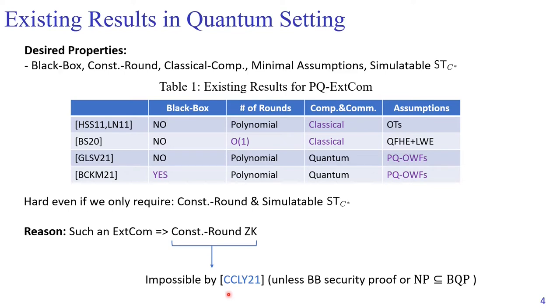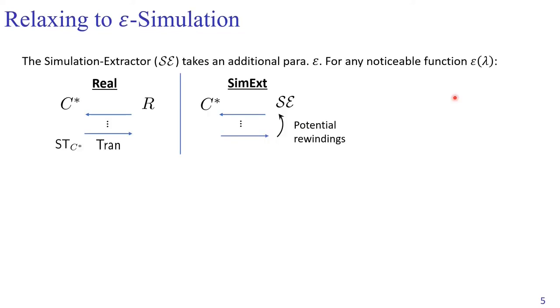If you are interested, you can check this paper in our reference. Due to the lower bound mentioned earlier, we cannot achieve all the desired properties. Therefore, we choose to aim at a weaker notion for simulation, called epsilon simulation.